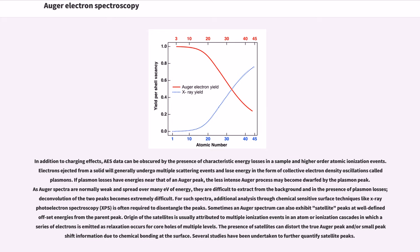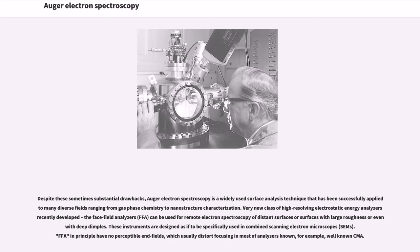Sometimes an Auger spectrum can also exhibit satellite peaks at well-defined offset energies from the parent peak. Origin of the satellites is usually attributed to multiple ionization events in an atom or ionization cascades in which a series of electrons is emitted as relaxation occurs for core holes of multiple levels. The presence of satellites can distort the true Auger peak and/or small peak shift information due to chemical bonding at the surface. Several studies have been undertaken to further quantify satellite peaks.